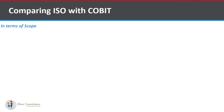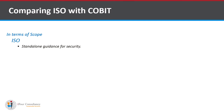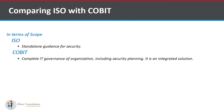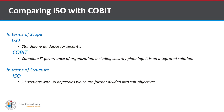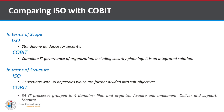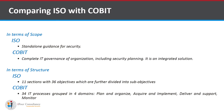Comparing ISO with COBIT in terms of scope and structure: ISO provides standalone guidance for security, while COBIT offers complete IT governance of the organization including security planning — an integrated solution. In terms of structure, ISO has 11 sections with 36 objectives further divided into sub-objectives. COBIT has 34 IT processes grouped into 4 domains: Plan and Organize, Acquire and Implement, Deliver and Support, and Monitor.